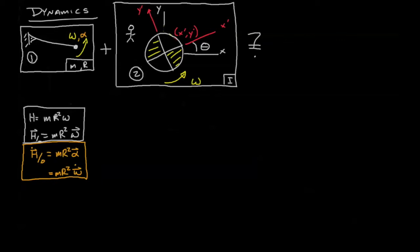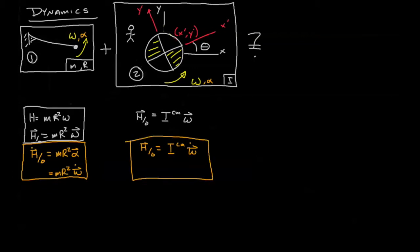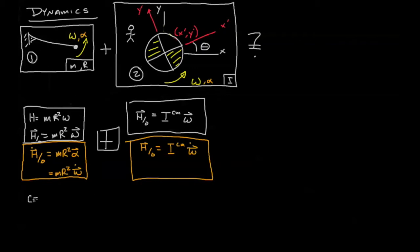Now let's take a look at scenario two. In scenario two we have some sort of rotating mass and we're given its polar moment of inertia. Writing this properly, the angular momentum with respect to O is simply equal to the polar moment of inertia about the center of mass times omega. The change in angular momentum is simply I omega dot, or I alpha if you prefer. We've looked at both of these equations in the past, and now the question is what does it look like if we combine them?